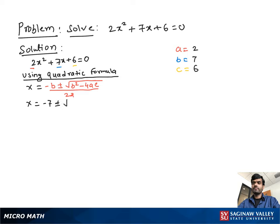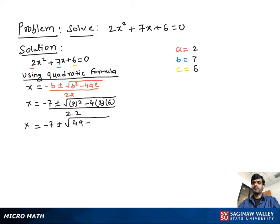Now substituting the values of a, b, and c into this equation, we get x is equal to negative 7 plus or minus the square root of 7 squared minus 4 times 2 times 6, over 2 times 2. This gives us x is equal to negative 7 plus or minus the square root of 49 minus 48, over 4.